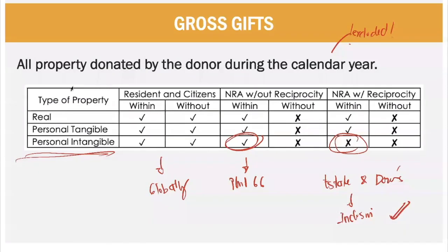As a recap, what are personal intangible properties? This talks about your financial assets and intangible assets. For financial assets, examples are receivables, cash, and investments. Intangible assets include franchise, patents, and trademarks. We still look whether the property is real or personal. For residents and citizens, they are taxed globally. For NRAs, they are only taxed based on Philippine gross gifts. We also look whether the NRA is with reciprocity or without reciprocity. If with reciprocity, personal intangible property is not included; if without reciprocity, we include it.